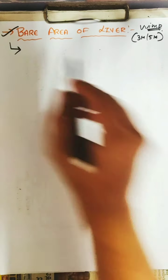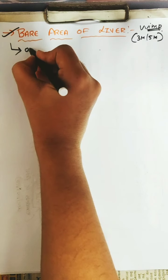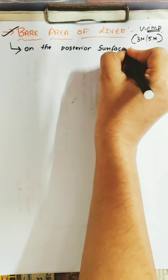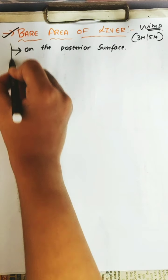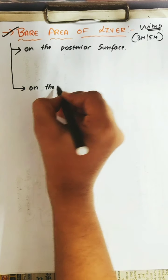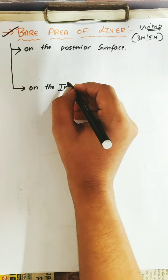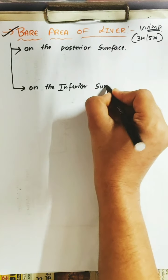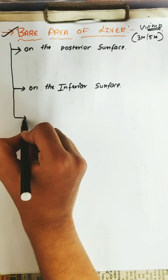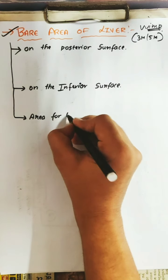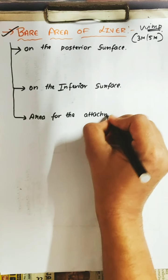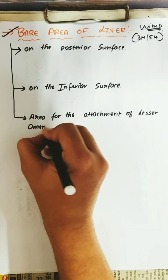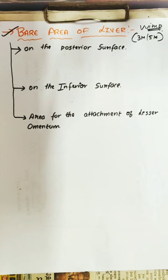There are three bare areas of the liver you have to remember. The first one is present on the posterior surface. The second one is present on the inferior surface. The third one is the area for the attachment of the lesser omentum — where there is attachment of the lesser omentum, that area is a bit bare.